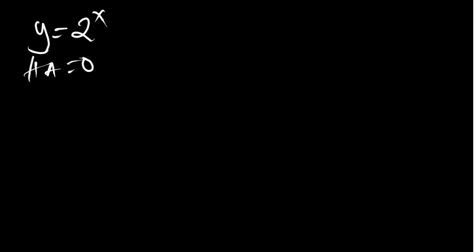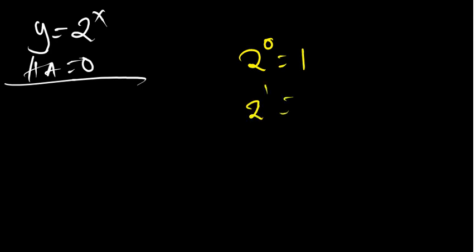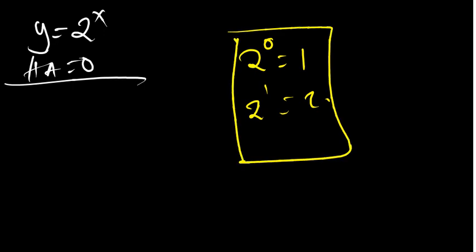Now, after finding the horizontal asymptote, we equate the exponent to two things: first equal to zero, and second equal to one. Why? Because any number to the power zero is one, and any number to the power one is equal to itself. So we set x equal to zero and x equal to one because plugging in those values makes it easy to calculate y.